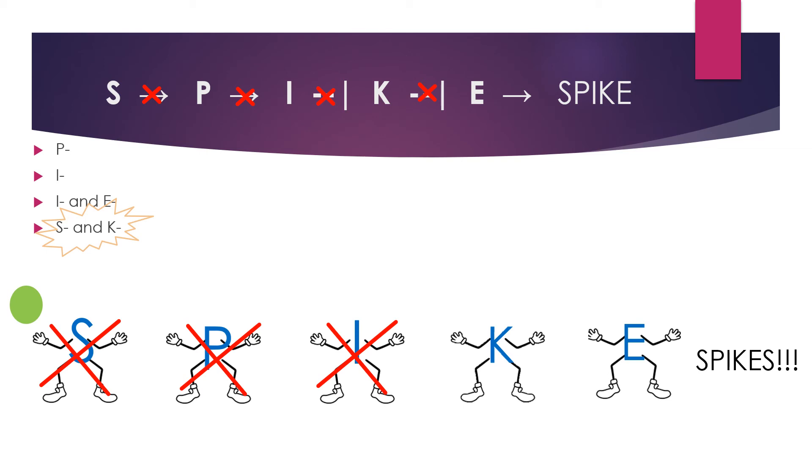And usually, as we have seen, when I is mutated, the cells don't produce spikes. This would be the case, but K is mutated as well, which means that there is nothing to block E from producing spikes. So spikes are finally produced.